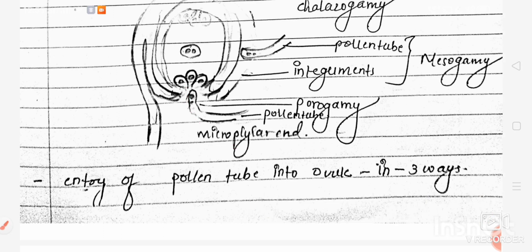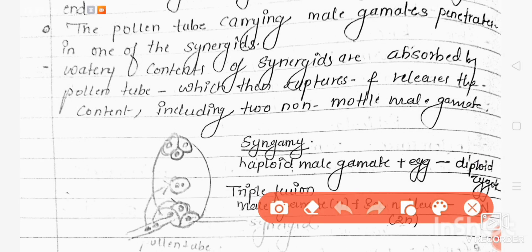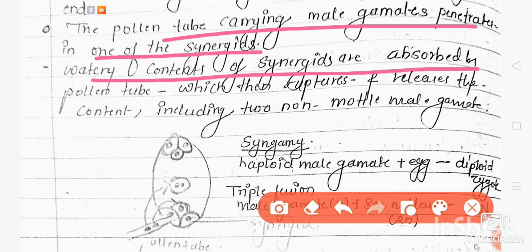Moving further, this pollen tube carrying male gametes penetrates into one of the synergids. The watery content of synergids is absorbed by the pollen tube, which then ruptures and releases the content, that means its two male gametes.